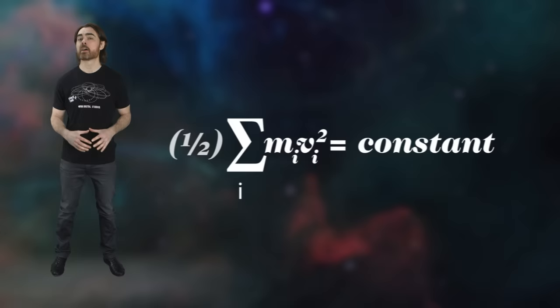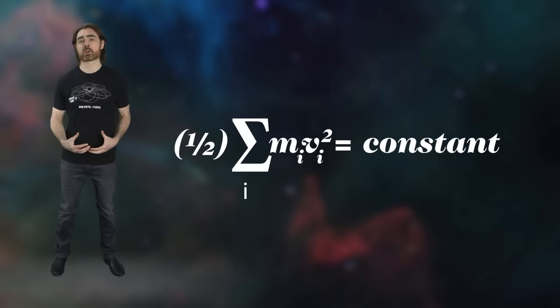It was 17th century polymath Gottfried Leibniz who first figured out the mathematical form of what we call kinetic energy, the energy of motion. He realized that the sum of mass times velocity squared for a system of particles bouncing around on a flat surface is conserved. It adds up to the same number, even though the speeds of individual particles changes.